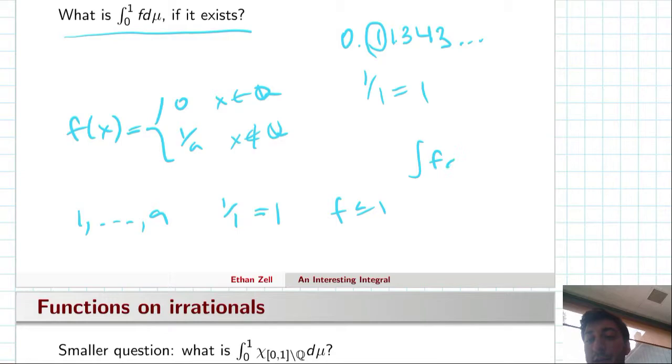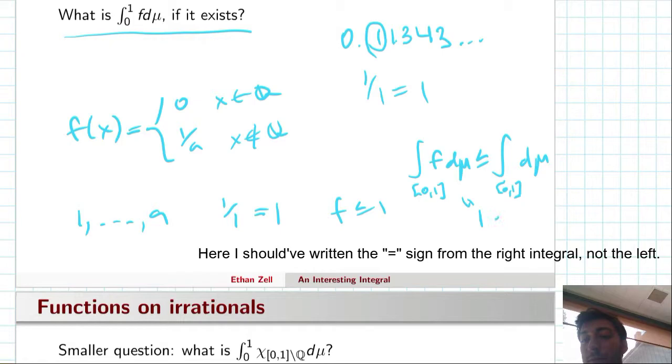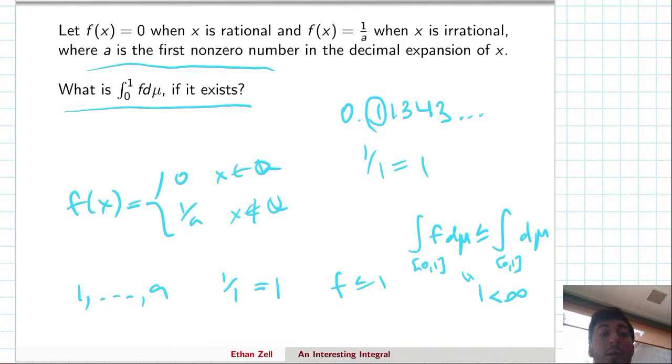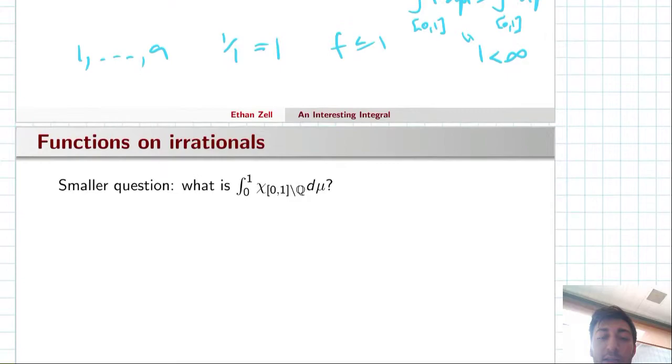On this unit interval, f is bounded above by one, which means that the integral of f with respect to the Lebesgue measure is bounded above by the integral over the interval zero one with respect to just one. That means f is certainly a bounded integral, and this function is integrable. So we can look for an exact value.